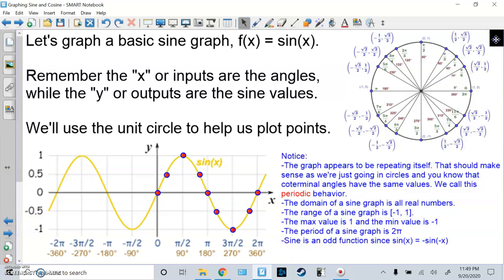The first thing we should notice is, the graph appears to be repeating itself. That should make perfect sense, since we're just going in circles. You know that co-terminal angles have the same values. So we call this periodic behavior, because it just keeps repeating this period.